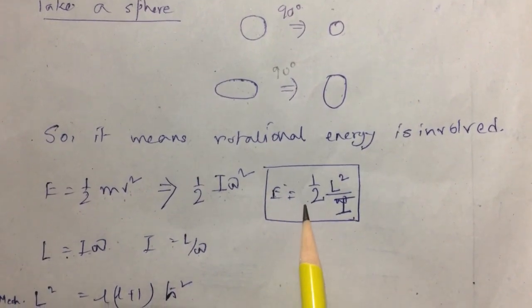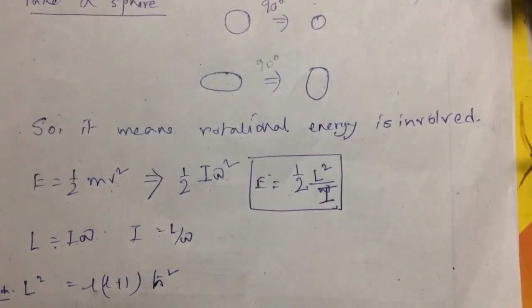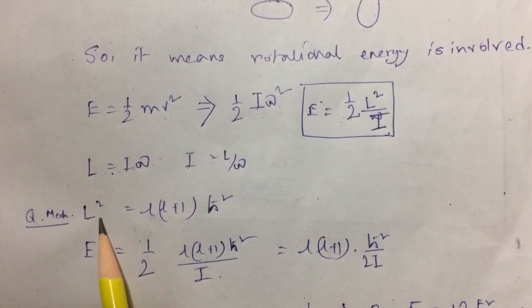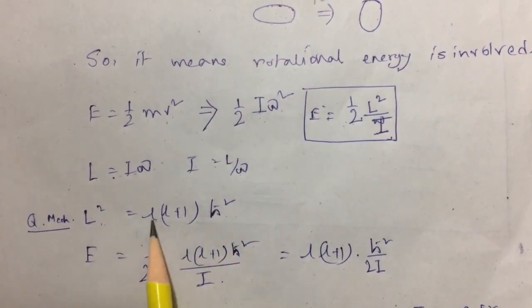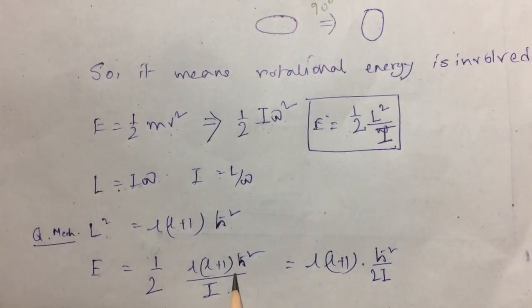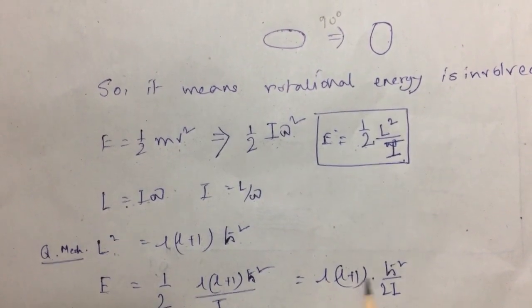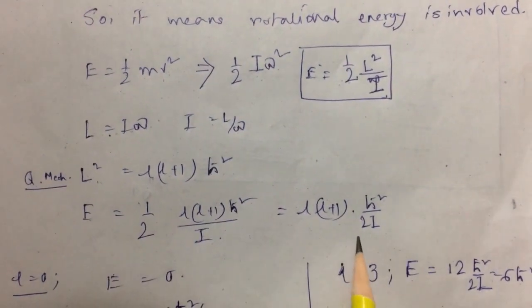So E becomes L squared by twice I. But in quantum mechanics we have already found this relation, so L squared will give me this value: L into L plus 1, h-cross squared. And so E will become L(L+1)ℏ² divided by 2I, if the rotational motion of the nucleus is involved.